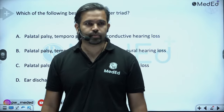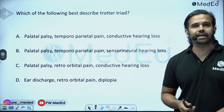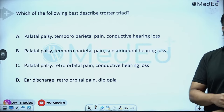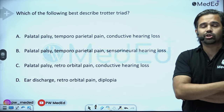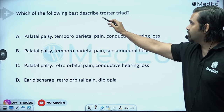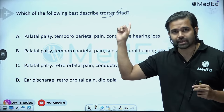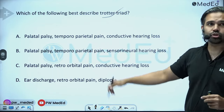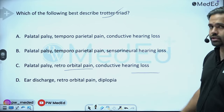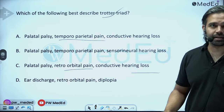First question: which of the following best describes Trotter's triad? In ENT, many conditions are named after doctors or scientists. Trotter is associated with nasopharyngeal and nasal conditions — so when you see the word Trotter, think nose and nasopharynx. Trotter's method involves pinching the nose to stop epistaxis. For Trotter's triad, Akshat suggested palatal palsy, retroorbital pain, and conductive hearing loss, but retroorbital pain is incorrect — the correct answer is temporoparietal pain.